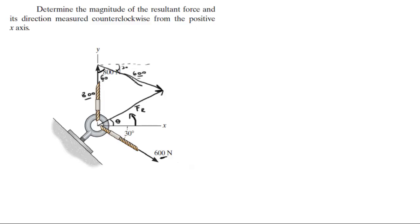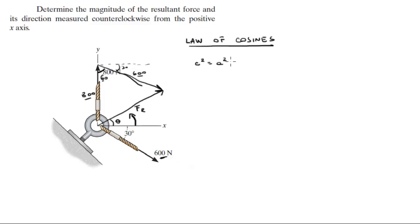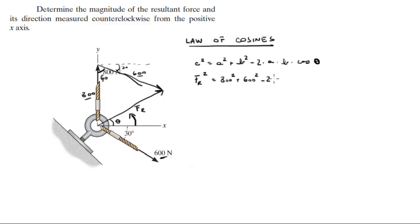Now you have two sides of the triangle and the angle between them. Whenever you have two sides of the triangle and the angle between them, you use the law of cosines to find the third side, which would be FR. The law of cosines says that side c squared equals a squared plus b squared minus two times a times b times the cosine of the angle between them. So FR squared equals 800 squared plus 600 squared minus two times 800 times 600 times cosine of 60 degrees.